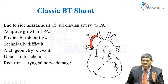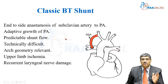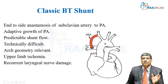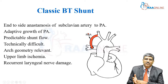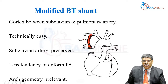Technically, this might be very difficult because you have to sacrifice the subclavian artery, dissect many structures, and perform the end-to-side anastomosis with the pulmonary artery. Aortic arch geometry is very much relevant because you have to do the shunt on the opposite side of the arch — if it is a right aortic arch, you do a left-sided classic shunt; if it is a left arch, you do a right-sided BT shunt. By sacrificing the subclavian artery, limb ischemia is bound to happen, and excessive dissection can cause recurrent laryngeal nerve damage.